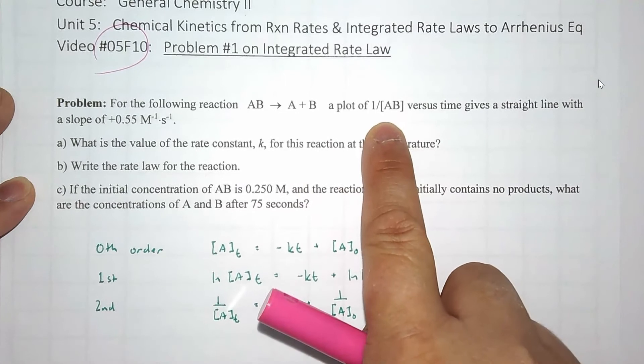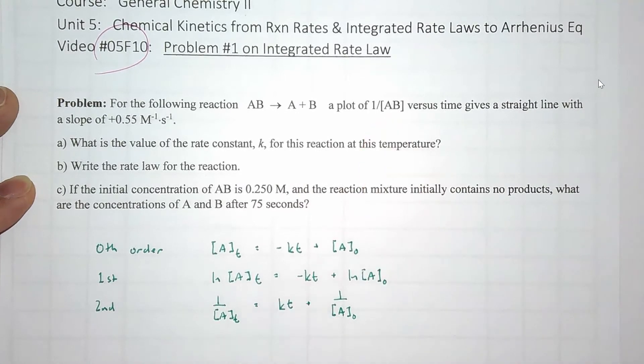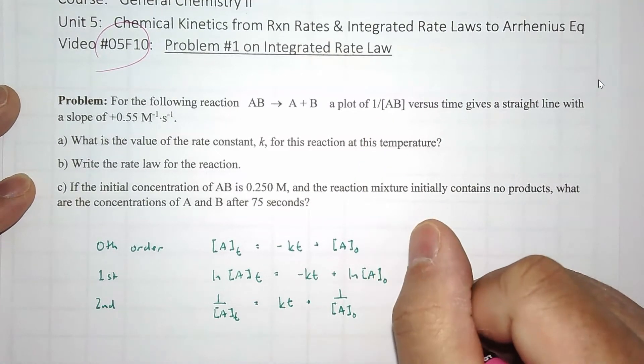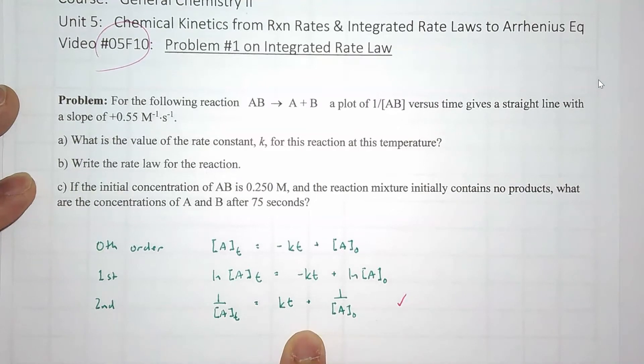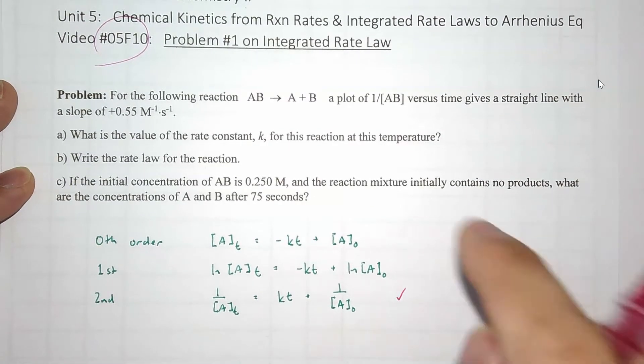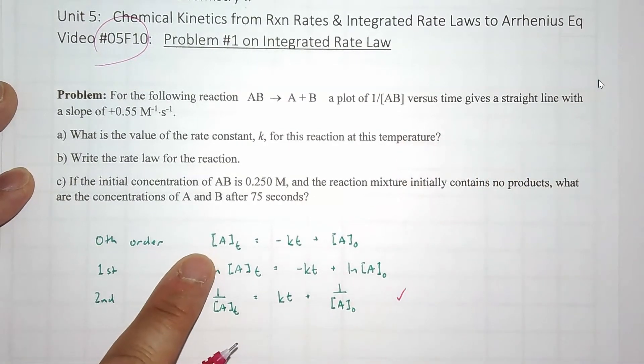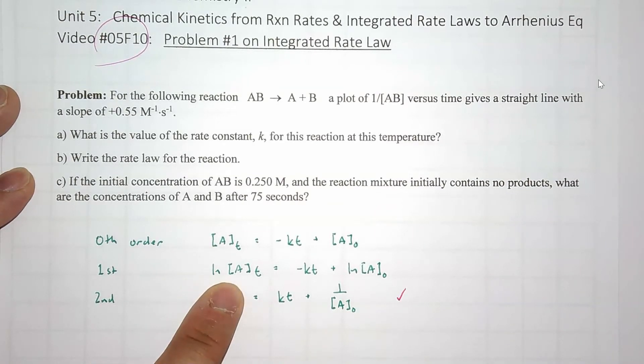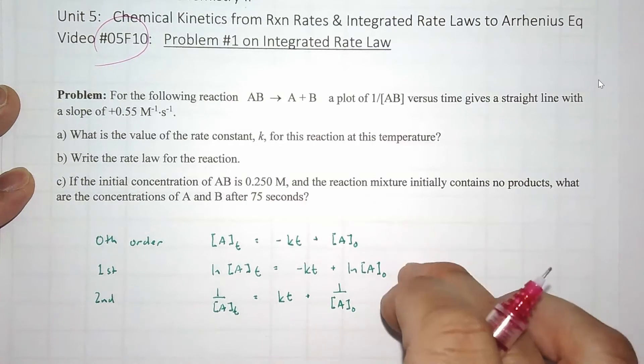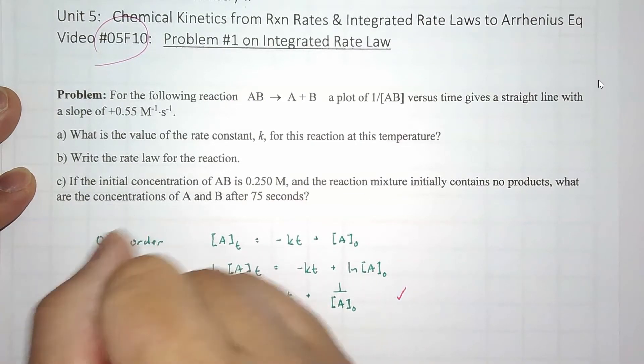Plot of 1 over AB versus time gives a straight line. So that tells me that gives a straight line, and you could assume that if you graph this data where the y-axis is the concentration of A or the ln of the concentration of A, these will not give straight lines. So this tells me that this is second order.